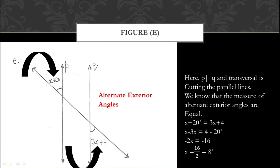These two angles are alternate exterior angles. According to the properties of parallel lines, the measure of alternate exterior angles is equal to each other. So we put the two angles equal: X + 20° = 3X + 4.